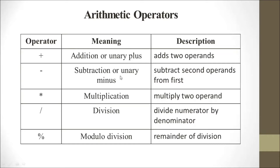This is subtraction or unary minus — it subtracts the second operand from the first. This is multiplication, which multiplies two operands. This operator is division — it divides the numerator by the denominator, for example 20 divided by 5. And here is the modulus operator, which gives the remainder of the division.